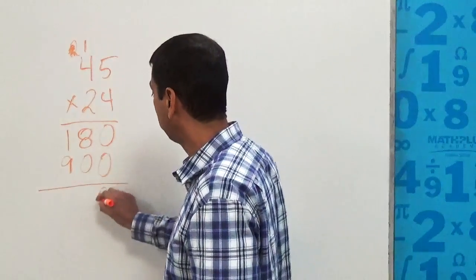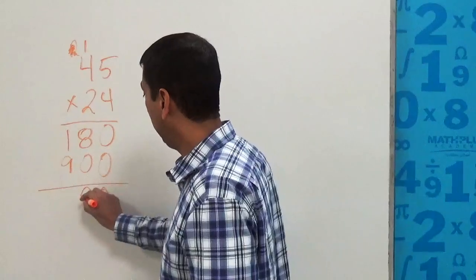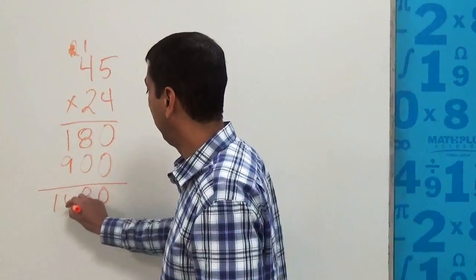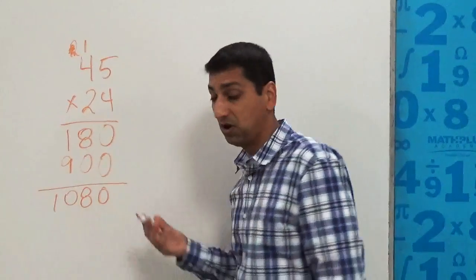And then we add these all together: zero, zero, zero. There's an eight, and here's 10, and it's 1,080. Hopefully, that's right.